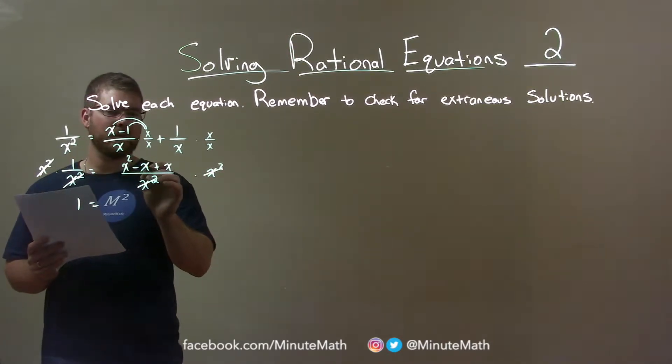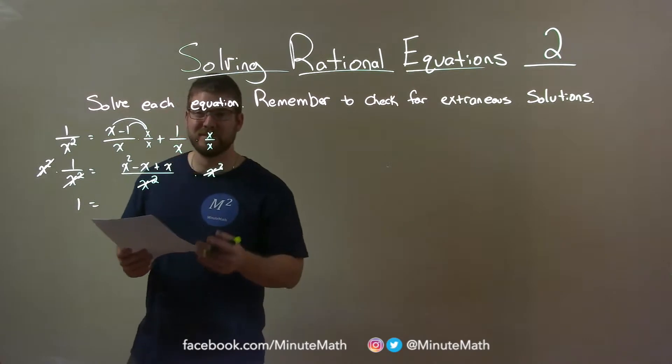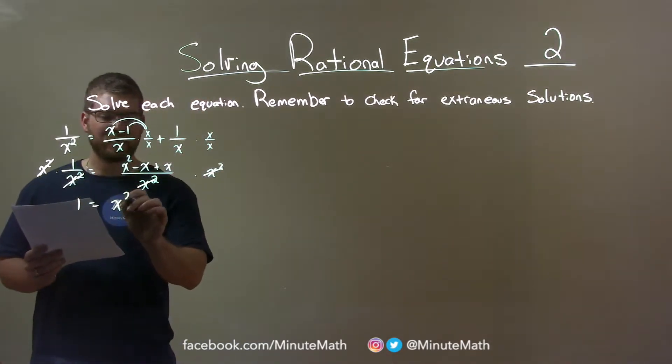Now we can combine the numerator. Negative x plus x is just 0, right? They cancel each other out. So we're left with just x squared here.